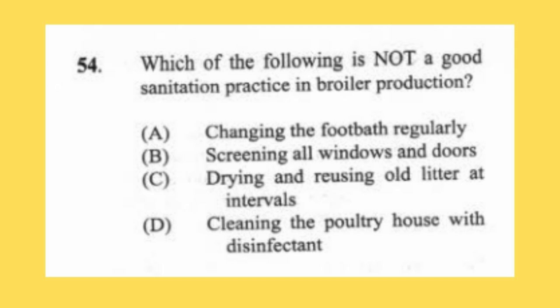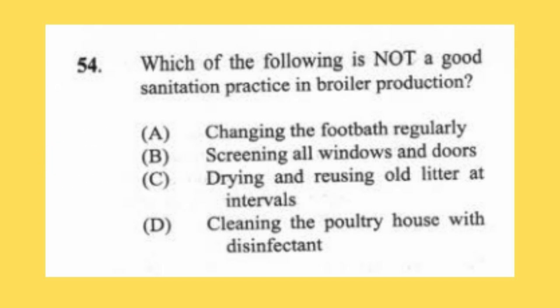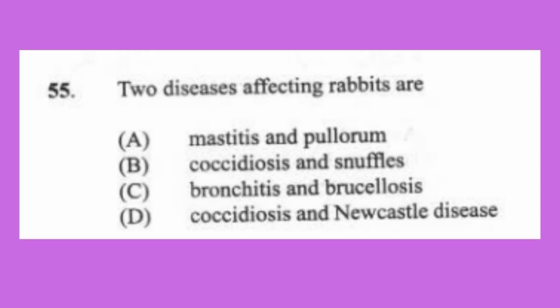Question 54: Which of the following is not a good sanitation practice in broiler production? (a) changing the footbath regularly, (b) screening all windows and doors, (c) drying and reusing all litter at intervals, (d) cleaning the poultry house with disinfectant. The answer is B, screening all windows and doors. Doing so would eliminate ventilation, which is very important for keeping litter dry.